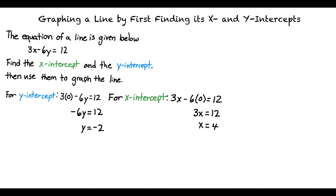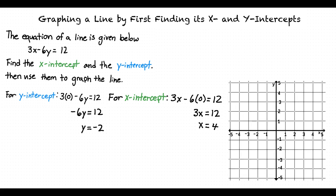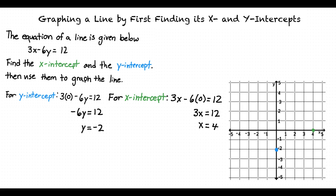Now that we have the numerical values for the x- and y-intercepts, how do we use them to graph the line? To graph the line, we can first plot the x- and y-intercepts. The x-intercept has a value of 4 and occurs when y is equal to 0, so its coordinate point is (4, 0). The y-intercept has a value of negative 2 and occurs when the x-value of the line is 0, so its coordinate point is (0, -2). We can connect the two points to successfully graph our line using the x- and y-intercepts.